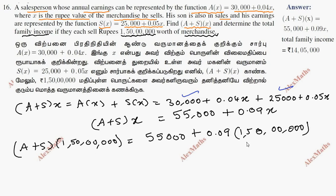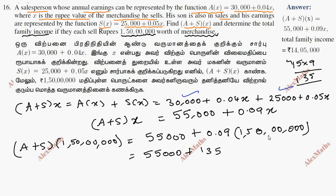Computing 0.09 into 1,500,000: 15 into 9 gives 135. So 0.09 multiplied by 1,500,000 equals 135,000. Tracking the decimal places — 2 decimal places — gives 135,000.